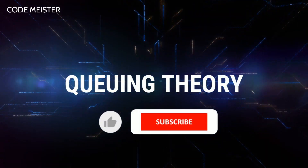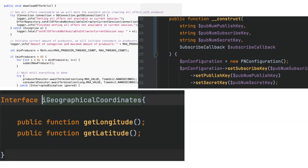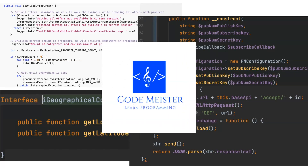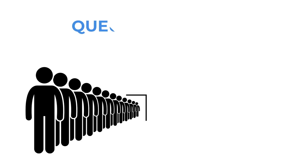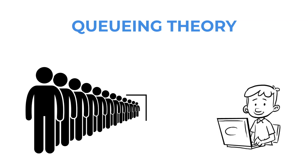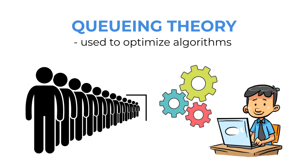Today we will talk about queuing theory. Queuing theory is a branch of mathematics that studies the properties of queues and their operations. Queues are important in many fields, including computer science, operating systems, and telecommunications. Queuing theory is also used to optimize algorithms, and there are numerous possibilities to implement a queue in your system. Let's compare some of them.